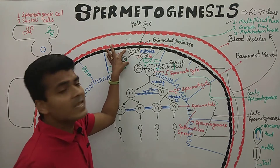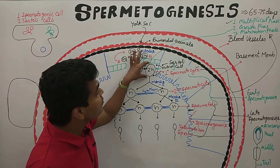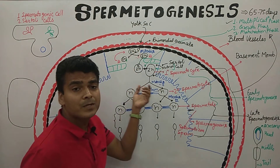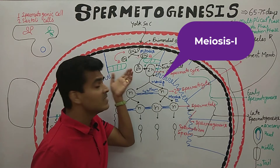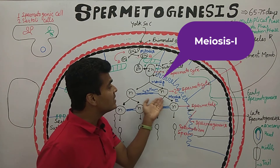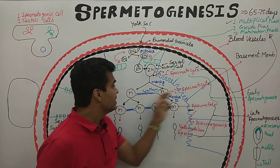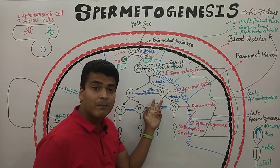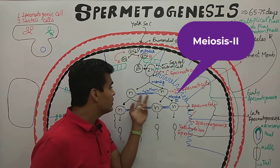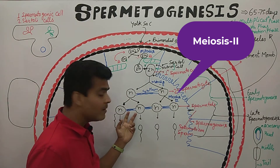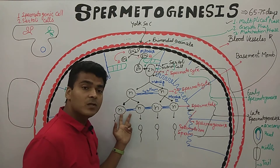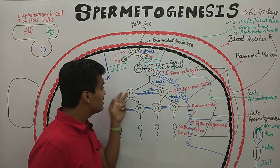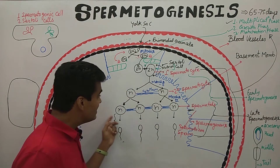The previous phase is the multiplication phase. Now in the growth phase, a primary spermatocyte is formed. This primary spermatocyte undergoes meiosis 1, converting from a diploid cell to a haploid cell — this cell is known as a secondary spermatocyte. Then these haploid cells undergo meiosis 2, producing two further cells, and those two cells again divide into two, giving us four cells total.